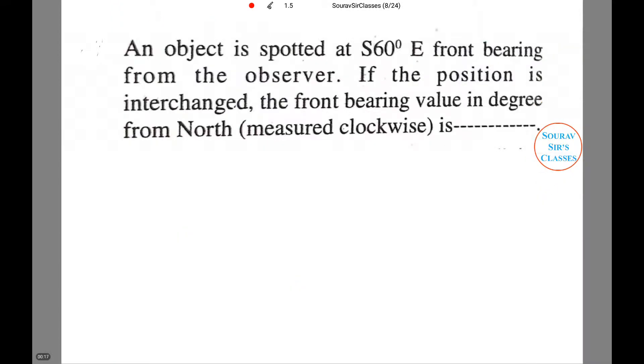This is the question with which we will be dealing in this particular tutorial. Let us read the question. An object is spotted at south 60 degrees east front bearing from the observer.